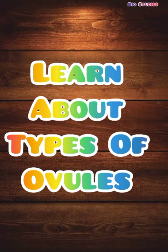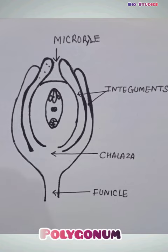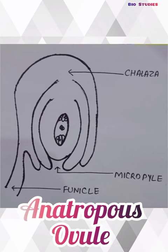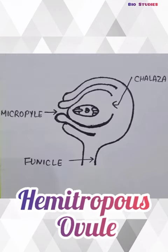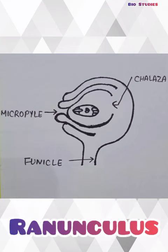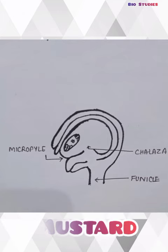Let's learn about different types of ovules. The first type is orthotropous ovule — example is Polygonum. The second is anatropous ovule — example is Helianthus. The third type is hemitropous ovule — example is Ranunculus. The fourth type is campylotropous ovule — example is mustard.